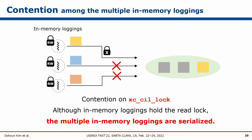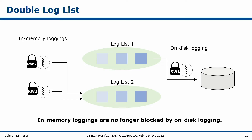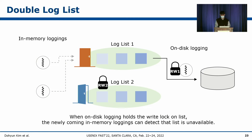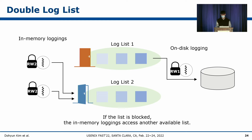We propose techniques that eliminate these contentions, and the newly developed system is called ScaleXFS. To address contention between in-memory and on-disk logging, we propose the double log list. In the double log list, we create two log lists, each assigned to its own logging type — one for in-memory logging and another for on-disk logging — so each can work simultaneously. New in-memory logging always checks whether a list is available, and if unavailable due to on-disk logging, it uses the other list.